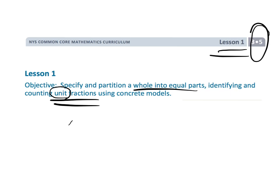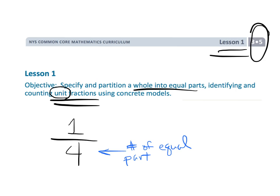...the numerator is always going to be a 1. In this lesson, for example, if we're talking about the unit fraction 1/4, the 4 is the denominator — it's the number of equal parts the whole has been cut into.